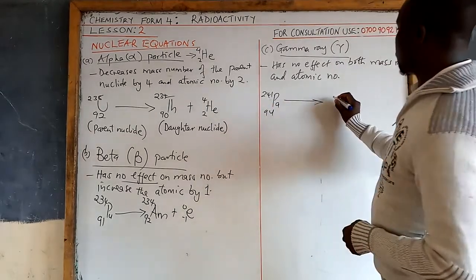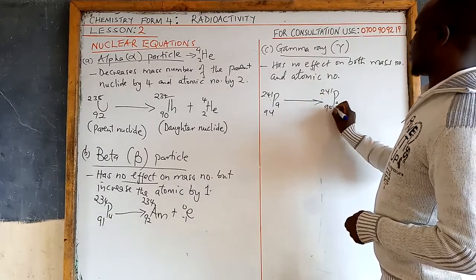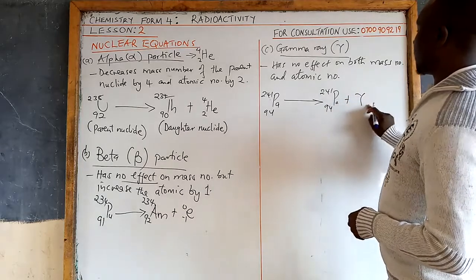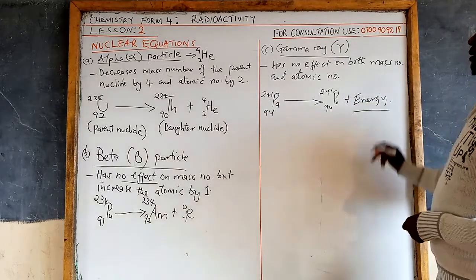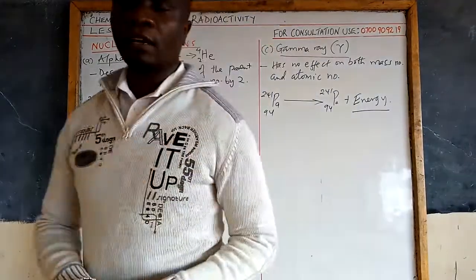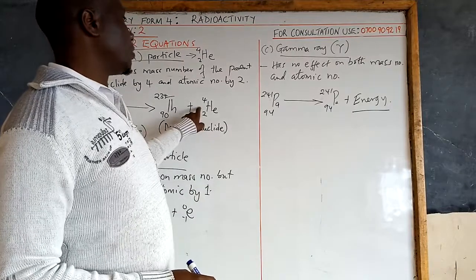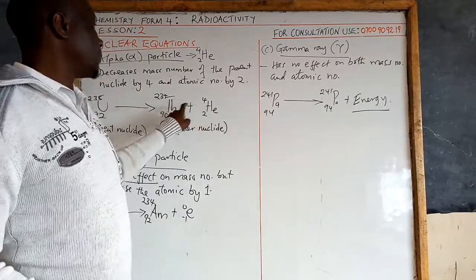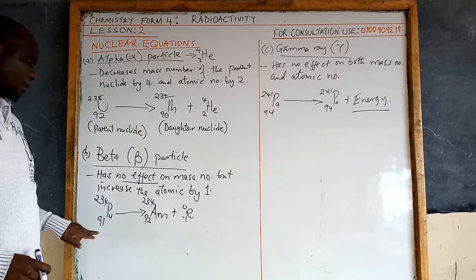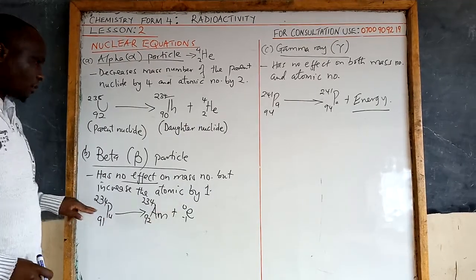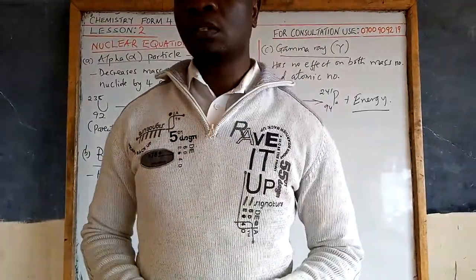Gamma decay is represented simply as energy emitted. The mass number remains the same — for example, 241 remains 241 — and you just add plus gamma or plus energy to the equation. Either notation is acceptable. For gamma we can use the gamma sign, but for alpha and beta we must represent them as helium or as an electron respectively, for proper balancing.